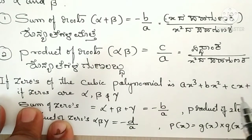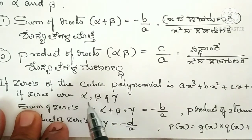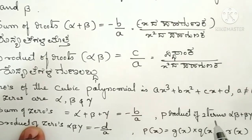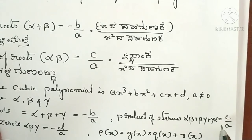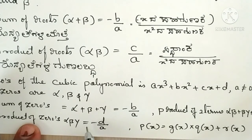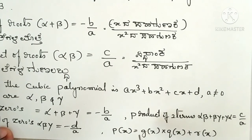If zeros of the cubic polynomial ax cubed plus bx squared plus cx plus d, where a is not equal to 0, are alpha, beta and gamma: sum of zeros alpha plus beta plus gamma is equal to minus b by a. Product of two terms alpha beta plus beta gamma plus gamma alpha is equal to c by a. Product of zeros alpha beta gamma is equal to minus d by a. And p of x is equal to g of x into q of x plus r of x.